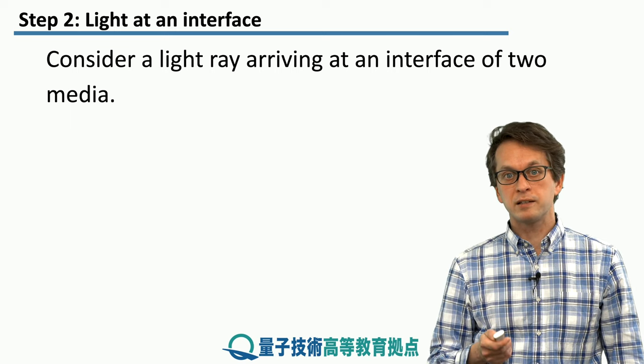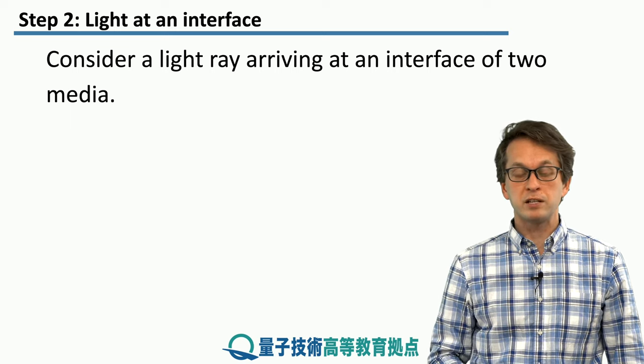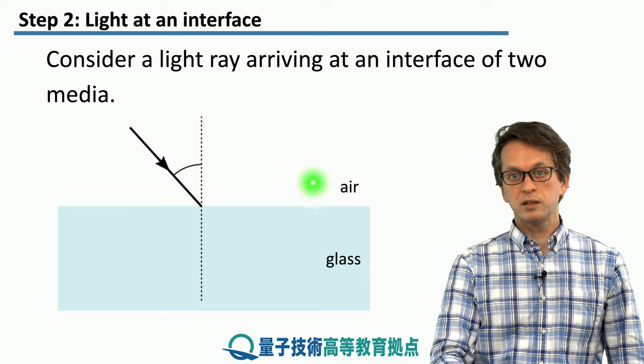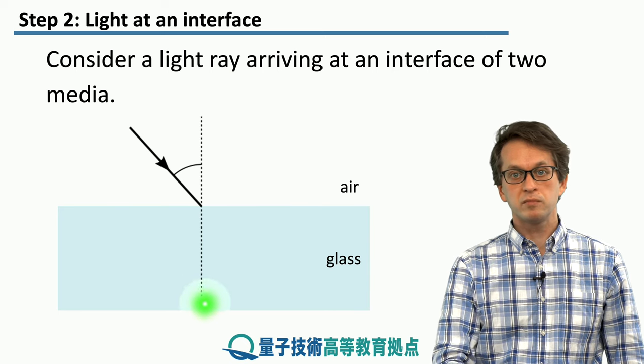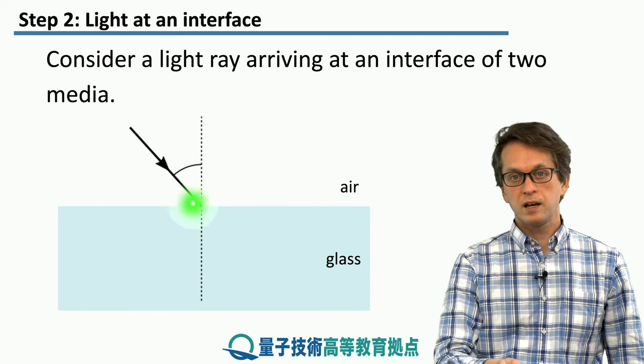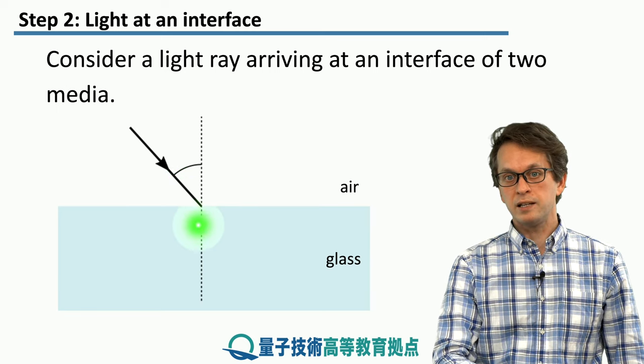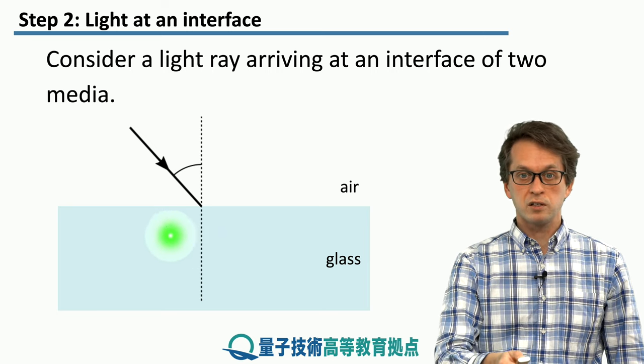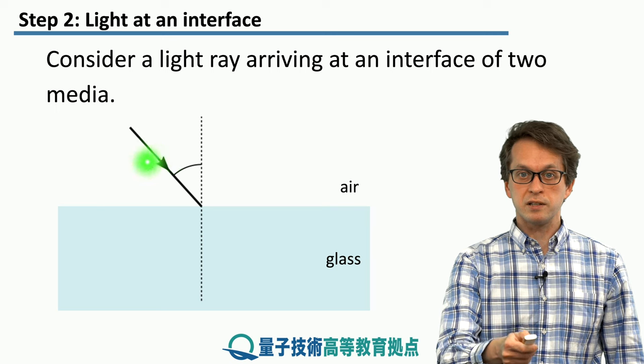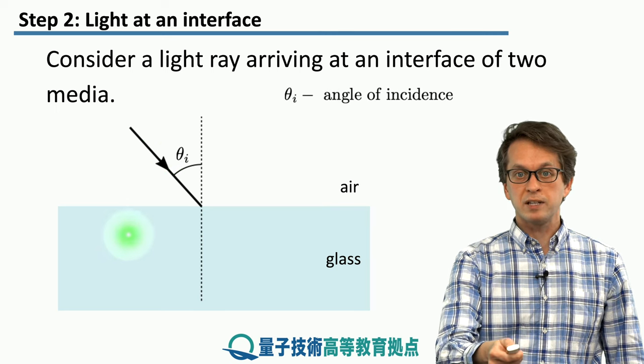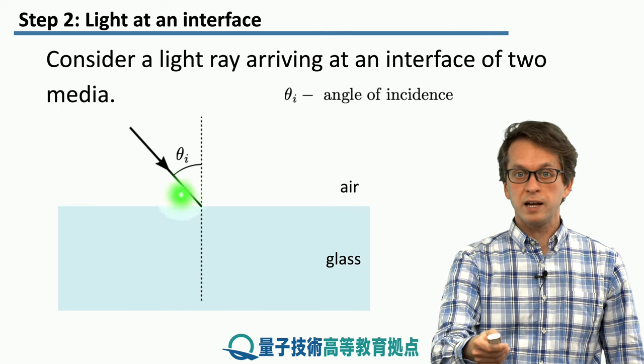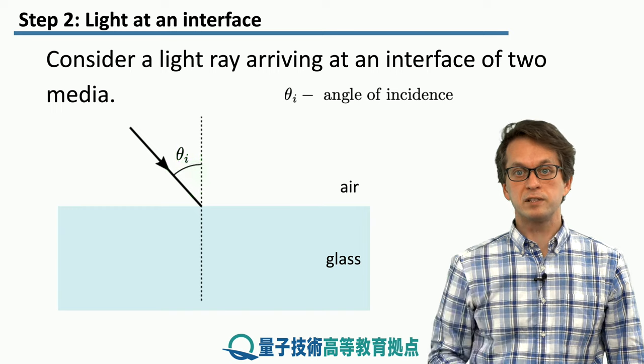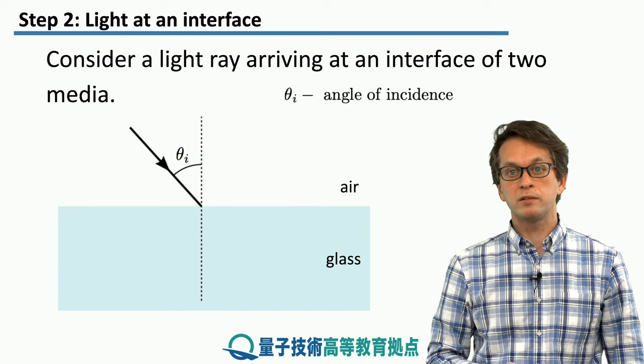Let's see what happens when light arrives at an interface of two media. We're going to consider one medium, usually air, and then some denser medium, let's say glass. The light ray arrives at some angle, and this angle is always measured with respect to the normal to the surface. We're not talking about the angle of incidence as that angle, but the angle between the light ray and the orthogonal normal line to the surface. This is the angle of incidence, denoted θ_i.